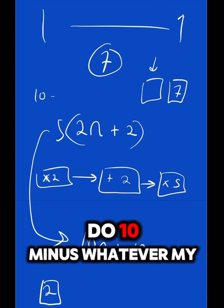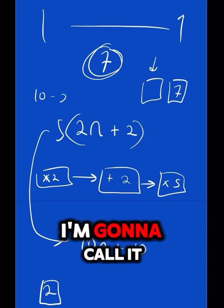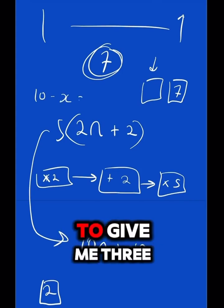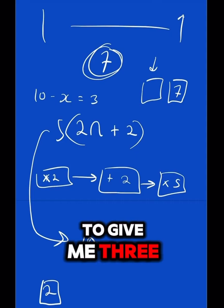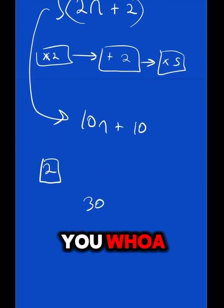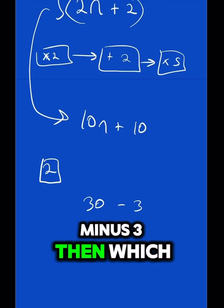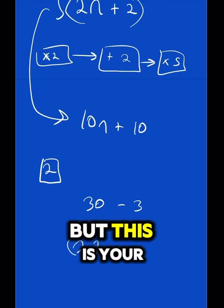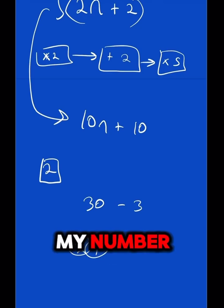I need to do 10 minus whatever my number is. I'm going to call it x, which is going to give me 3. So, I'm going to say to you, minus 3, which would give you 27. 2 is your original and 7 is my number.